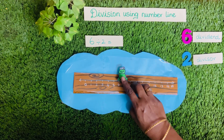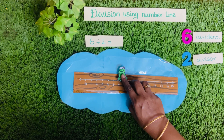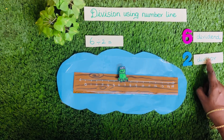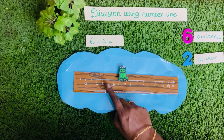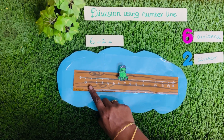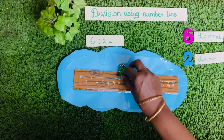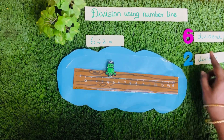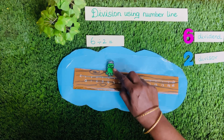Look at the frog. It is jumping on the number line. As the divisor is 2, it has to jump from right to left till it reaches the number 0. The first jump goes from 6 to 4. As the divisor is 2, it has to jump 2 spaces at a time.